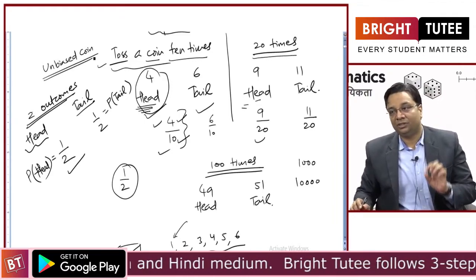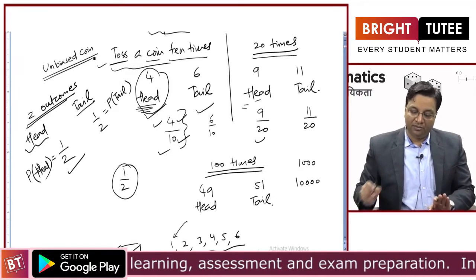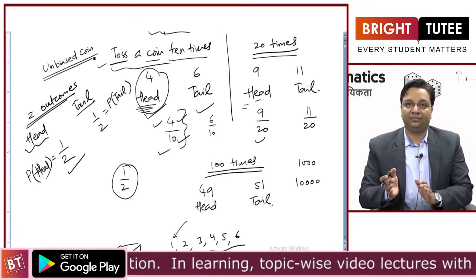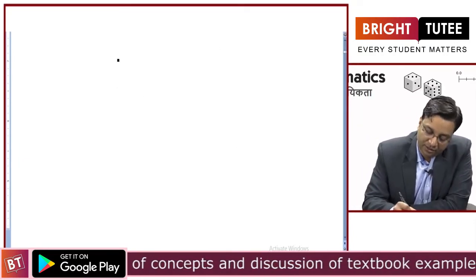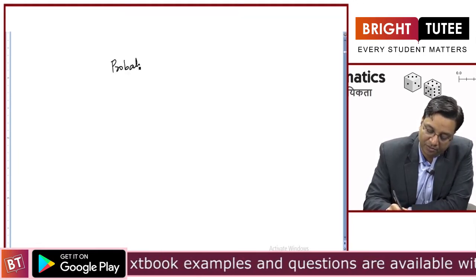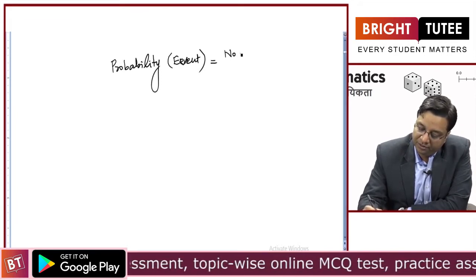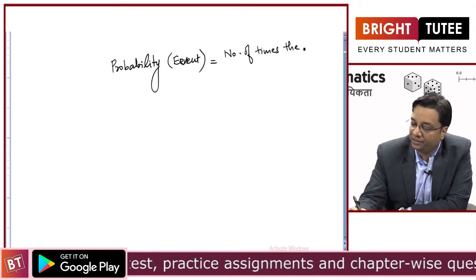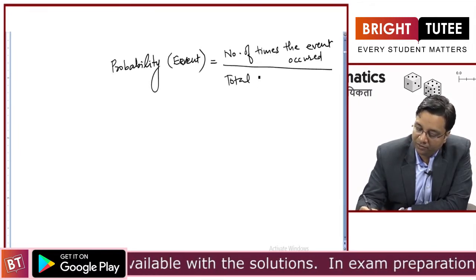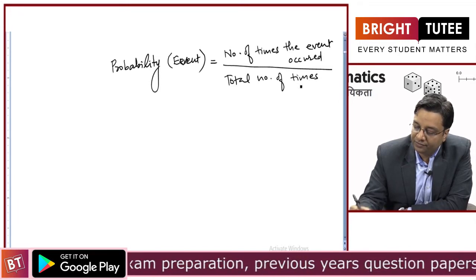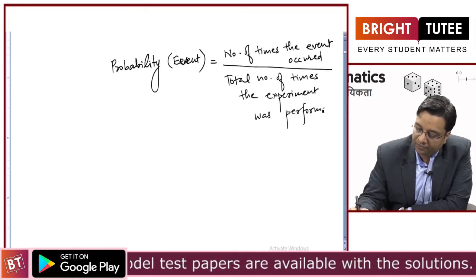What do you mean by an unbiased coin? Because of its shape it will not favor a particular outcome — it may fall on either side, and the shape of the coin will not bias the results. So, the formula for experimental probability: probability of an event is the number of times the event occurred divided by the total number of times the experiment was performed.